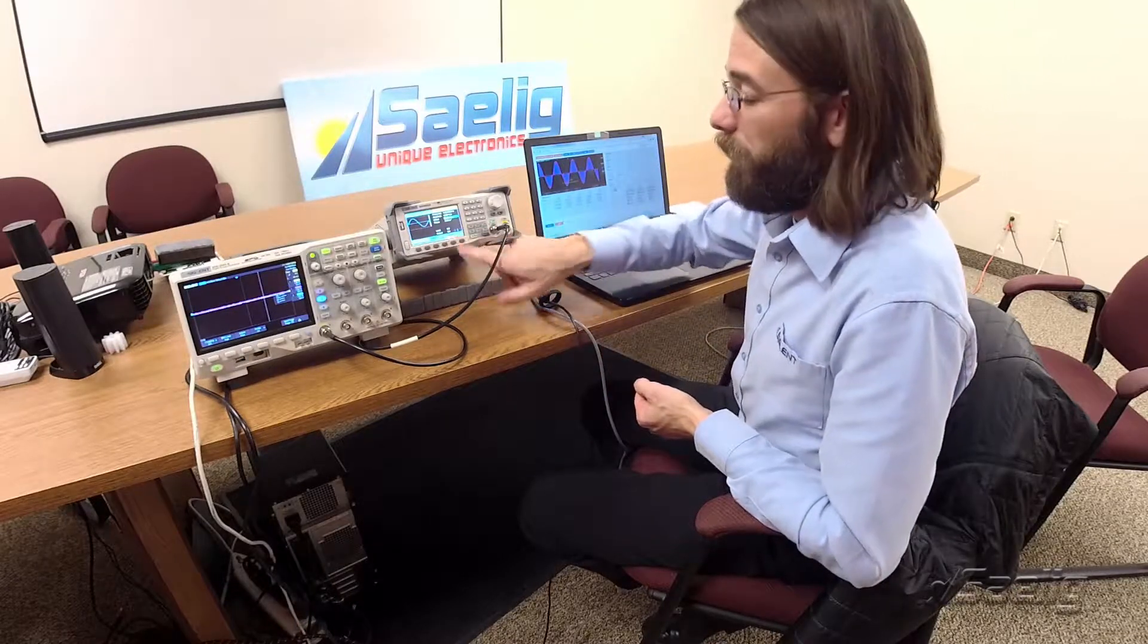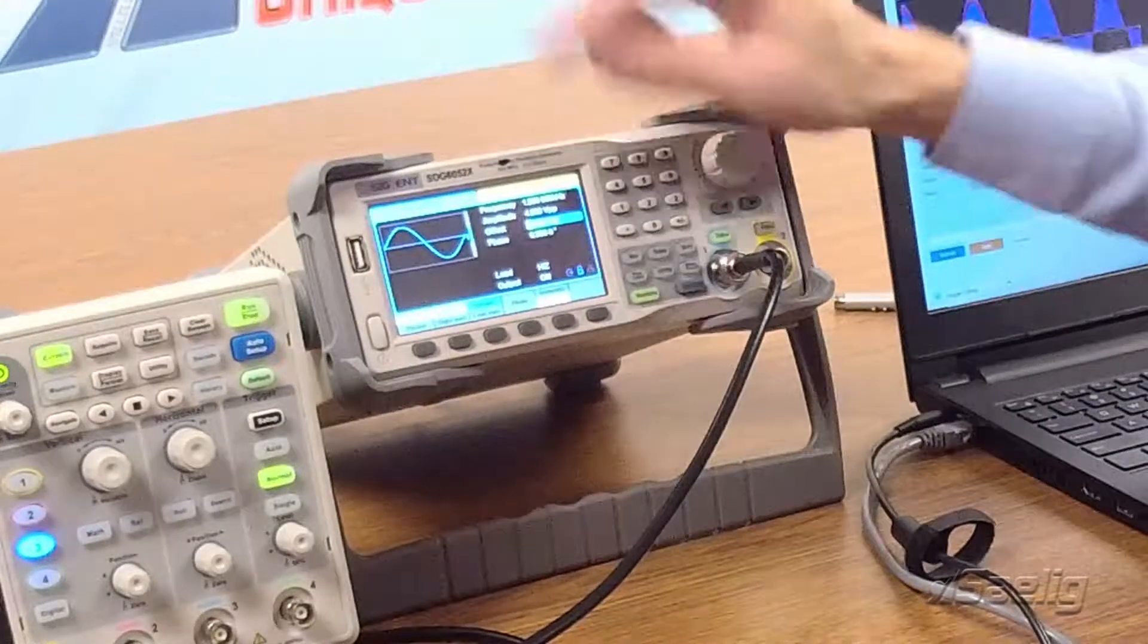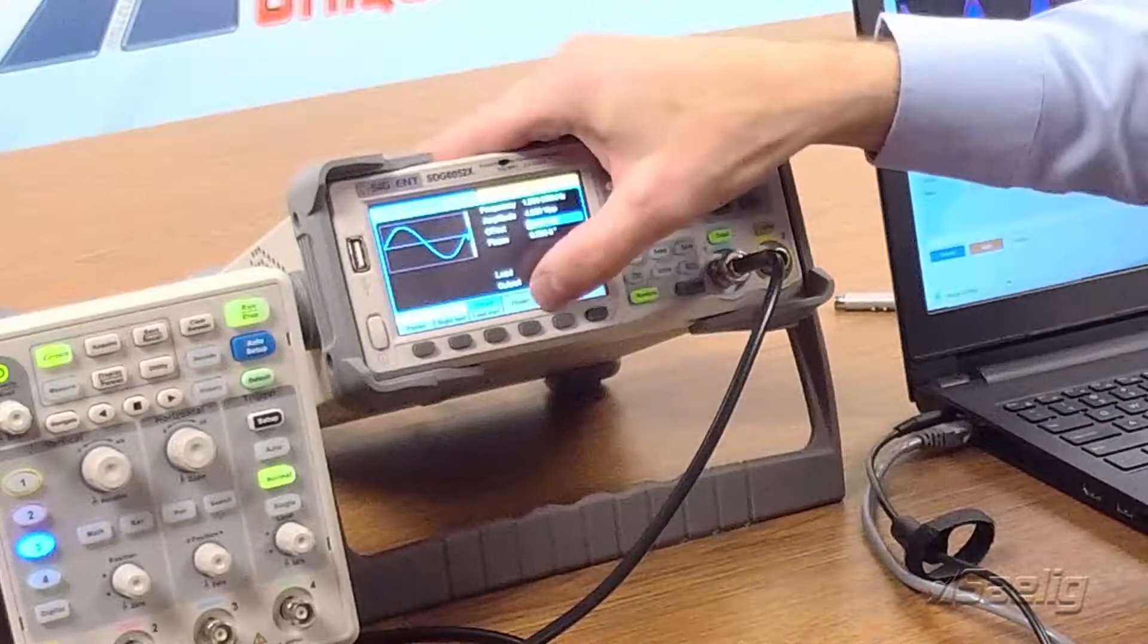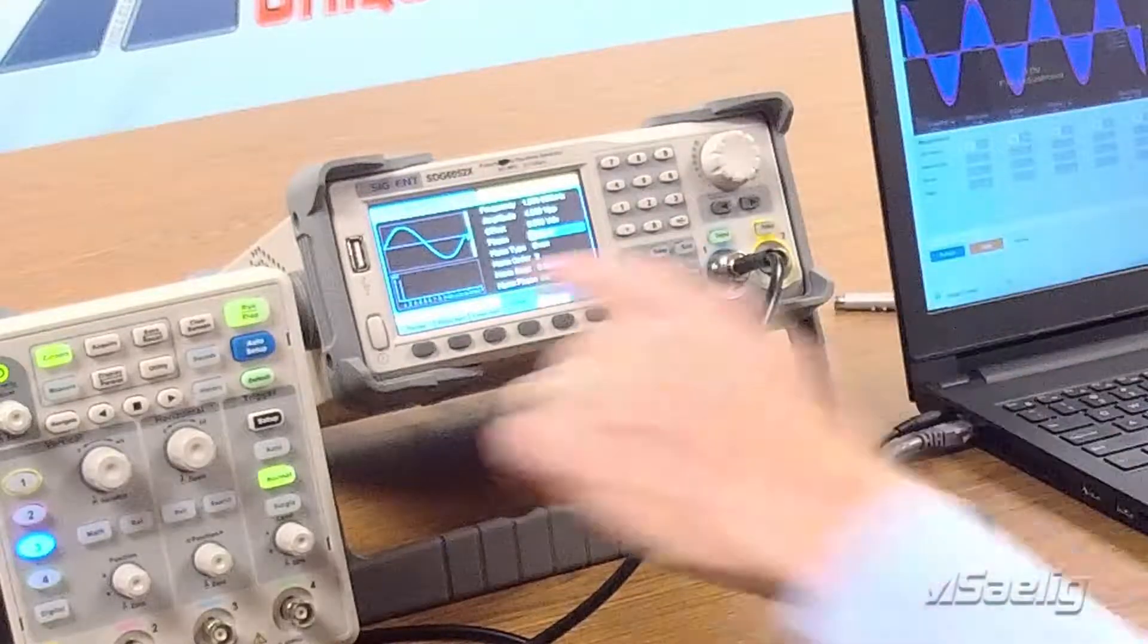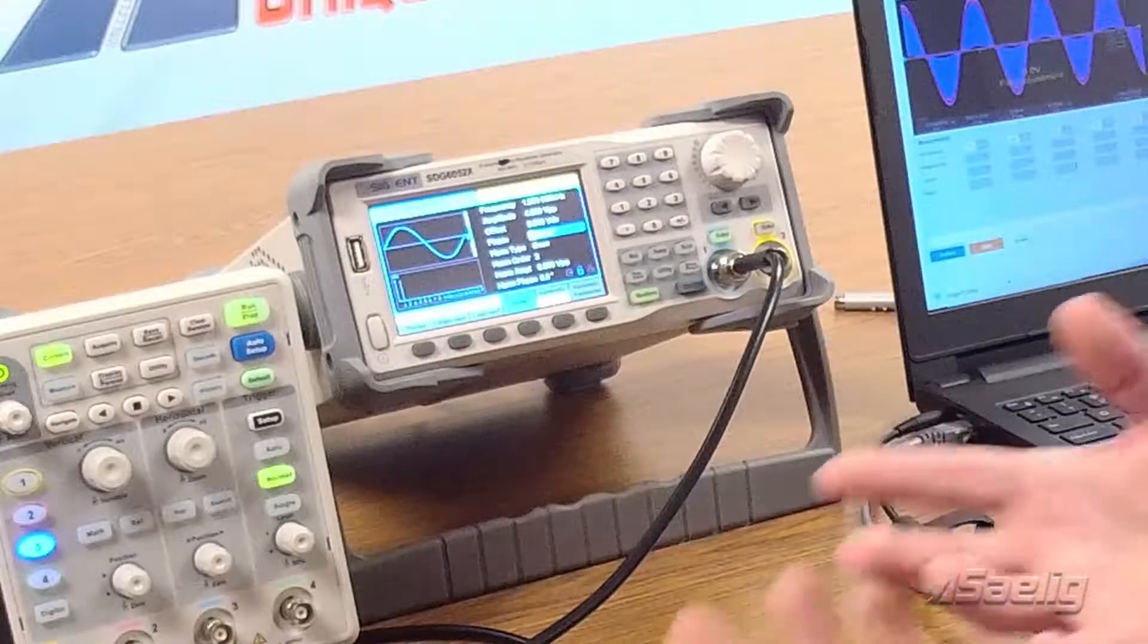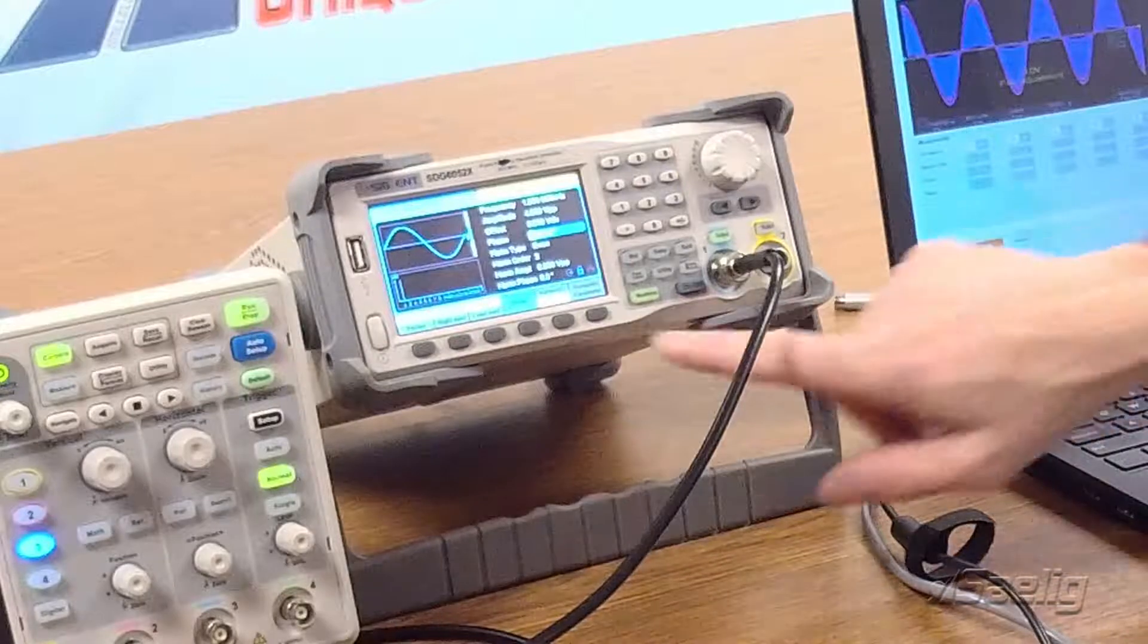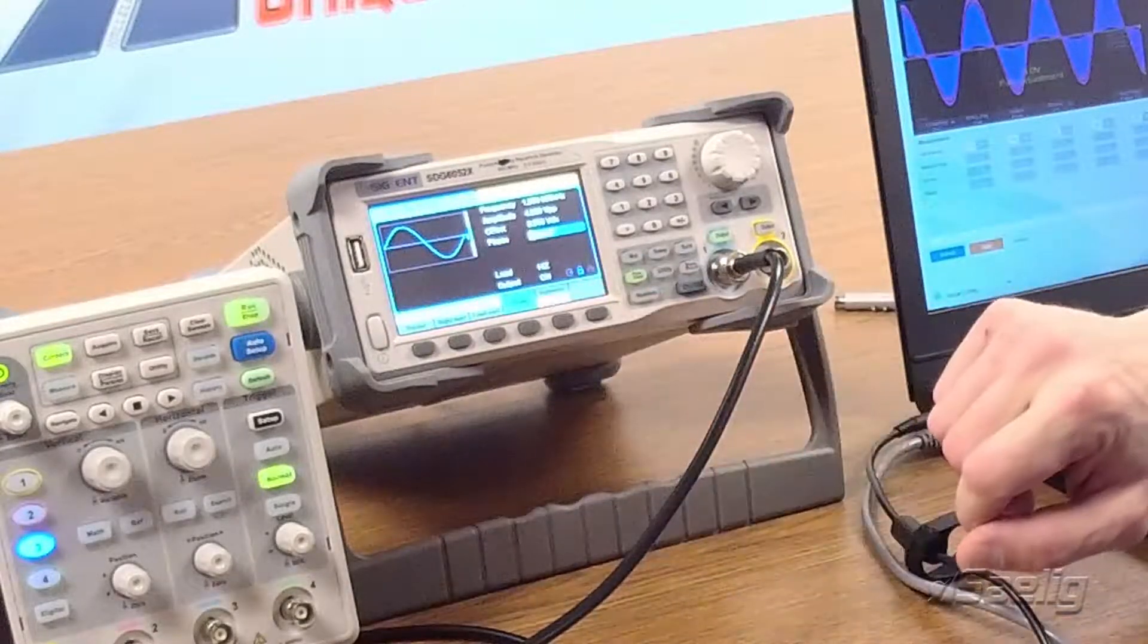Some other capabilities we've got, similar to our SDG X series, the 1000X and the 2000X. We also have harmonic capability, so we can actually add harmonics onto the standard sine wave in order to test the harmonic filtering capability of a particular network that we may be working on. We can set each of those harmonic parameters. We can then turn off the harmonics.